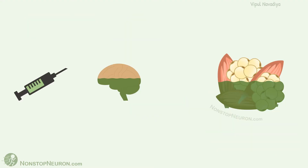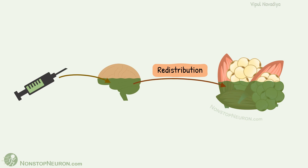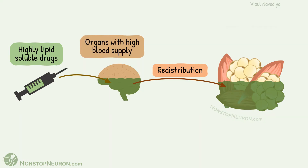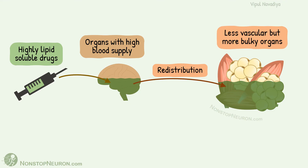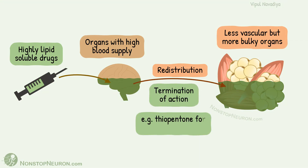Time for summary. In redistribution, a drug is first distributed to one organ and then redistributed to another organ. It is typically seen with highly lipid-soluble drugs. Such drugs are first distributed to organs with high blood supply, and then get redistributed to organs with less blood supply but that are more bulky. If the site of action of the drug is an organ with high blood supply, redistribution leads to termination of action. For example, general anesthesia induced by thiopentone disappears in a few minutes due to redistribution.